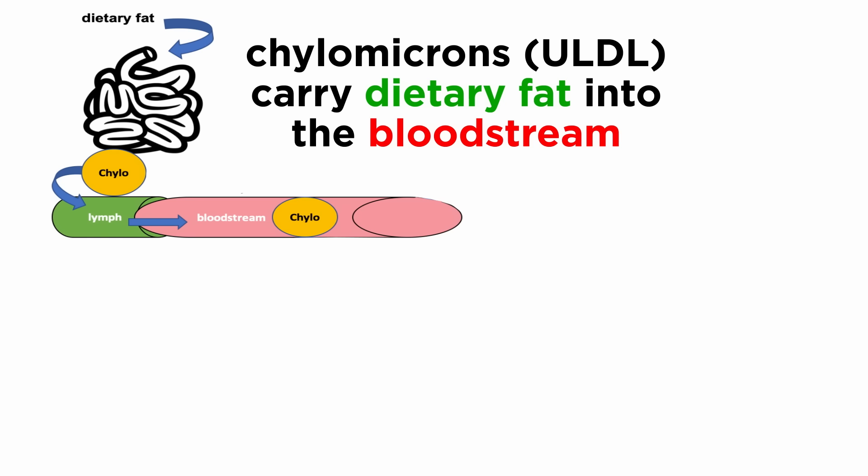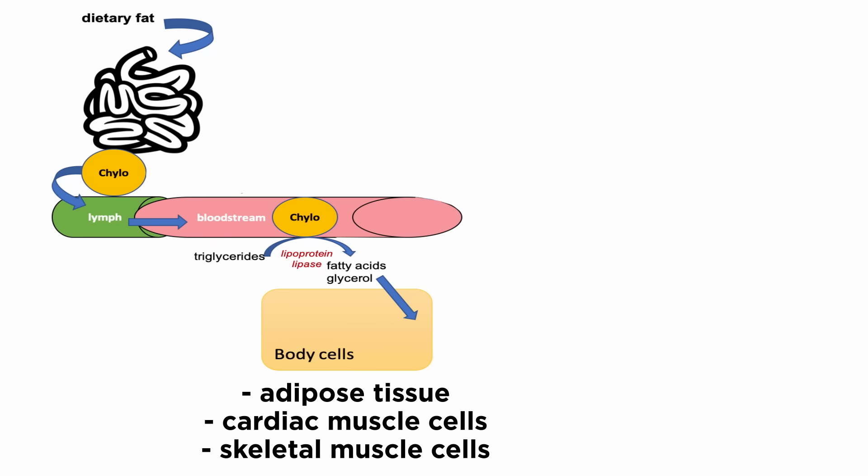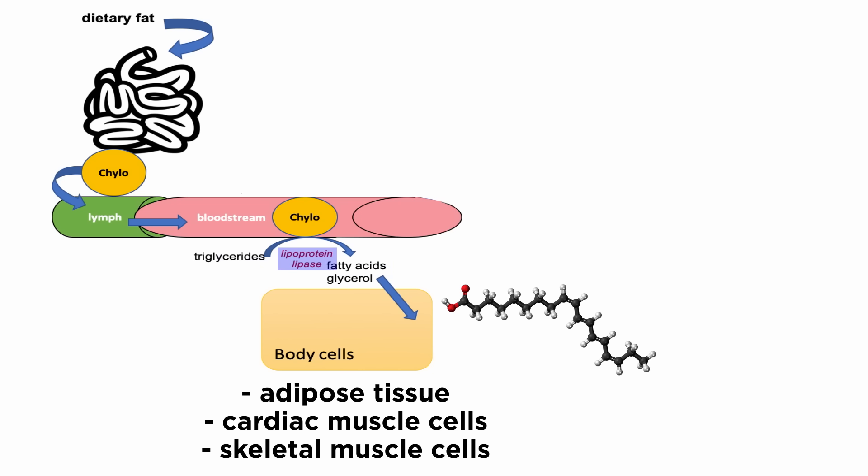Chylomicrons, or ultra-low-density lipoproteins, are the lipoproteins which are the primary mediators of transporting dietary lipids — meaning fat consumed in the diet — from the gastrointestinal system into the bloodstream. Therefore, they are responsible for supplying adipose tissue as well as cardiac and skeletal muscle cells with free fatty acids, following triglyceride hydrolysis by the membrane-bound enzyme lipoprotein lipase, which is expressed on the endothelial lumen of blood vessels.